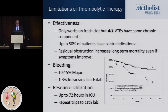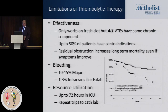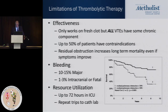It's a very traumatic procedure and is usually performed in patients who are in extremis. For patients who have less severe forms of pulmonary embolism, there was a search for less invasive ways to treat them. Thrombolytic therapy came on the scene many years ago, but the limitations are that it only works on fresh clot. Up to 50% of patients will have a contraindication because of a bleeding risk, and there's about a 10 to 15% risk of major bleeding.